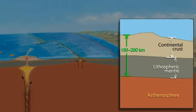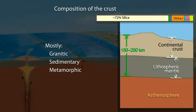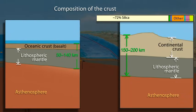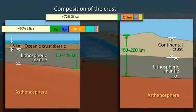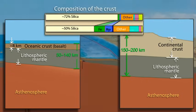Continental lithosphere with continental crust above the lithospheric mantle typically ranges from 150 to 200 kilometers thick. Continental crust stands above sea level because it has an average thickness of 40 kilometers and is mostly made of more buoyant, silica-rich, low-density granitic, sedimentary, and metamorphic rocks which form the continents. Oceanic lithosphere formed at spreading ridges is typically 50 to 140 kilometers thick. Oceanic crust is only around 8 kilometers thick and is denser than continental crust because it contains less low-density silica and more high-density iron and magnesium. Thus, it forms the ocean floor with its top surface below sea level.